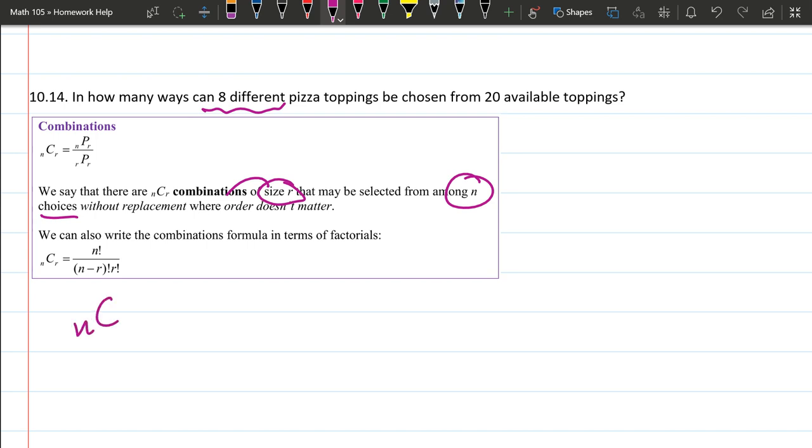So we're going to go nCr, and our number of total possibilities is 20. The number we're choosing is 8.